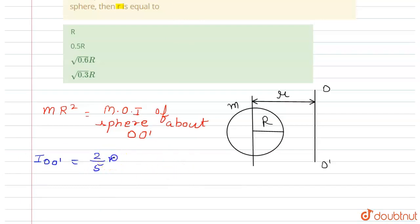Plus m small r square by parallel axis theorem, and the moment of inertia around this is two by five m R square.